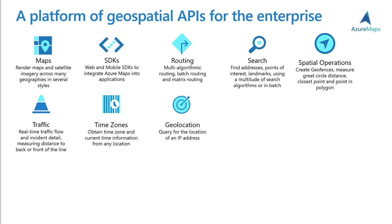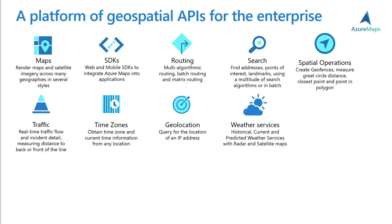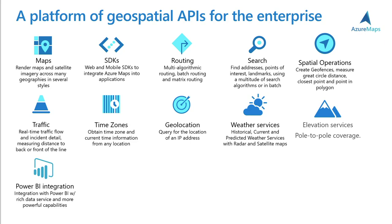If you need to get the IP location, you can use the Geolocation service to get location from users through their IPs. The Weather service was announced GA last month, and you can get not only historical data and current data, but also the forecast for up to 45 days. Next, we have the Elevation service with pole-to-pole coverage — you can get different kinds of elevations in a route or a specific part of the map. And last but not least, we have the Power BI integration. If you are using Power BI, you are already an existing customer of Azure Maps.